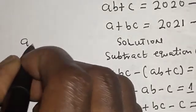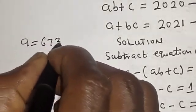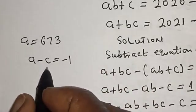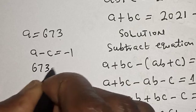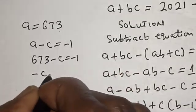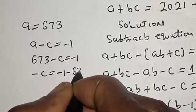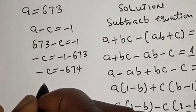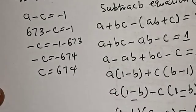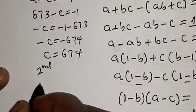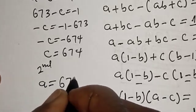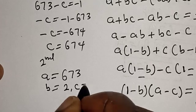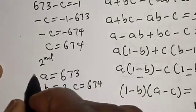Since A is equal to 673, let's substitute into A minus C is equal to minus 1: 673 minus C is equal to minus 1, so minus C is equal to minus 1 minus 673, giving C is equal to 674. So from the second case: A is equal to 673, B is equal to 2, and C is equal to 674. That is our answer.